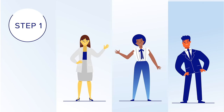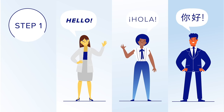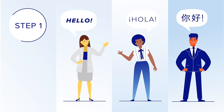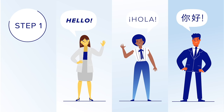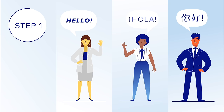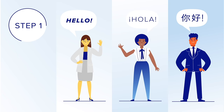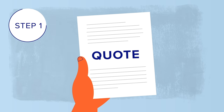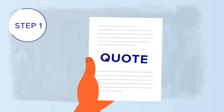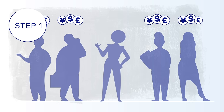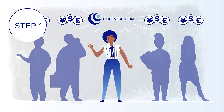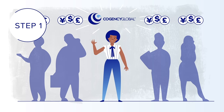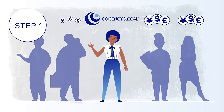Step 1: Contact a process agent provider. At Cogency Global, our international and multilingual team will respond promptly and provide a quote based on the number of appointing parties and term of the deal. We're the only player in the industry that does not charge a per-agreement fee.